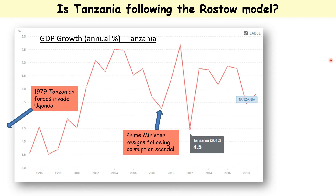In 1979, Tanzania was at war with Uganda. Because of the war, they'd have been making less money and less development could have occurred, and the country might have even gone temporarily backwards. Then in 2009, the prime minister had to resign following a corruption scandal. This would have slowed down development because industries might not have had so much confidence to invest if a new government is having to come in.